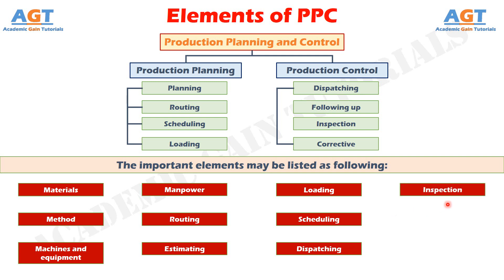Element No. 10: Inspection. This function is related to maintenance of quality in production and evaluating the efficiency of the processes, methods and labor, so that improvement can be made to achieve the quality standards set by product design. Element No. 11: Evaluating. The objective of evaluating is to improve performance. Performance of machines, processes and labor is evaluated to improve the same.